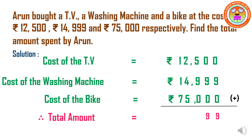Next, 5 plus 9 is 14, and 14 plus 0 is 14. So I write 4 down and carry 1 above. Now 2 plus 4 is 6, and 6 plus 5 is 11, and 11 plus 1 is 12. So 2 is written down with 1 carry over. Next, 1 plus 1 is 2, 2 plus 7 is 9, and 9 plus 1 is 10. So the total amount is Rs. 1,02,499. Therefore, amount spent by Arun is Rs. 1,02,499. Understood, children?